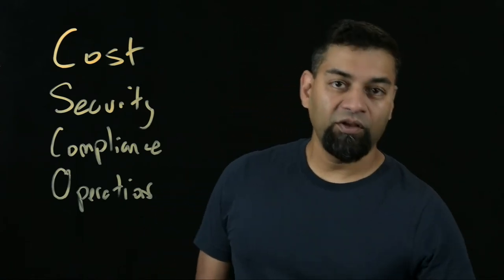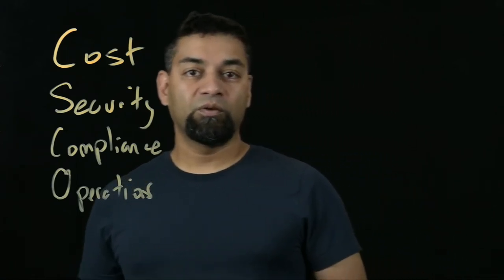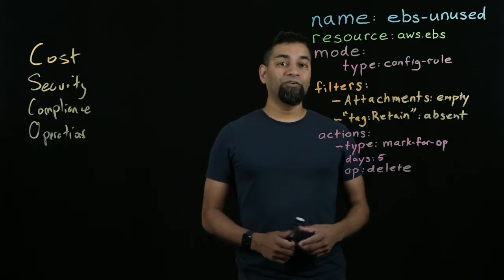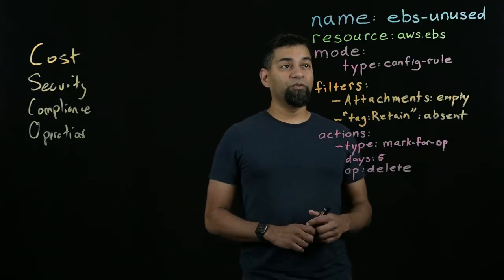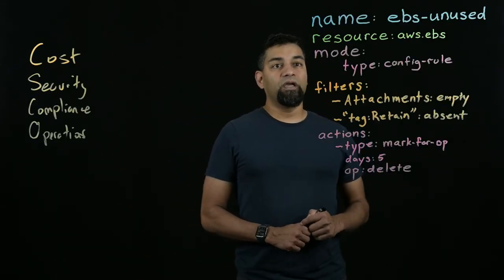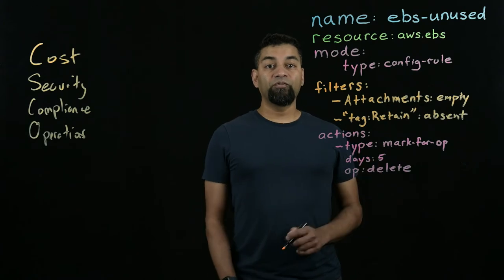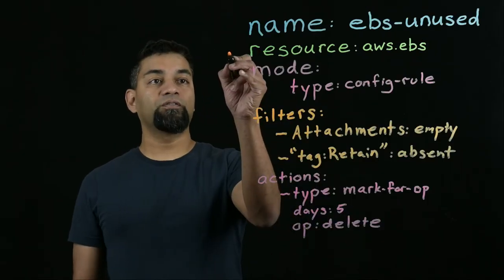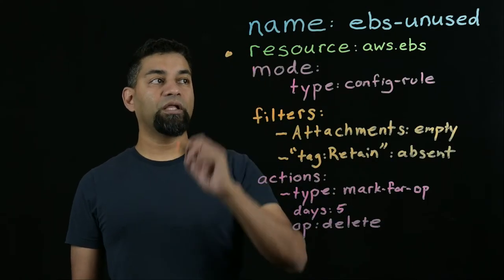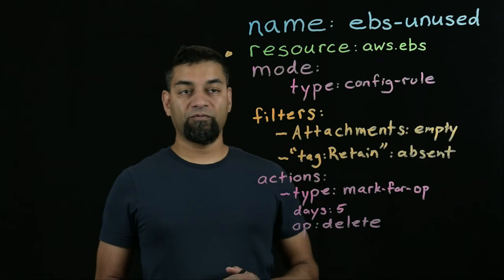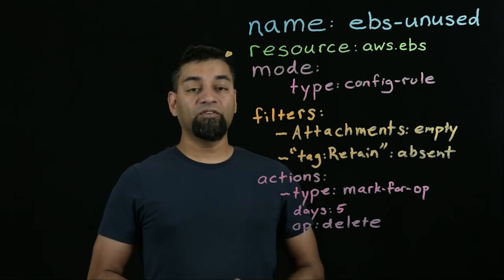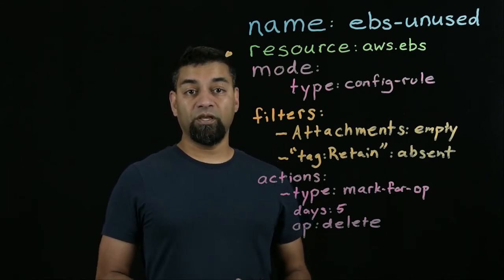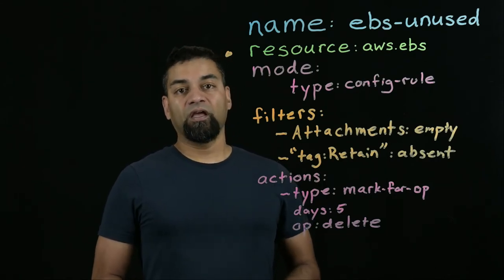Let's take a look at what a Cloud Custodian policy looks like. A Cloud Custodian policy is written in a YAML DSL and has a few key parts. The first part is that it always targets an individual cloud resource type. In this case, we're looking at AWS EBS volumes.